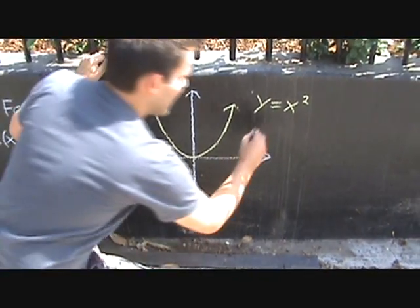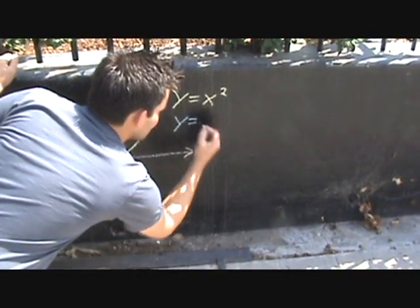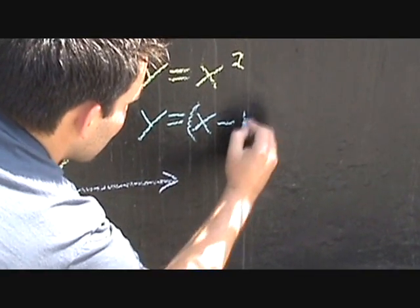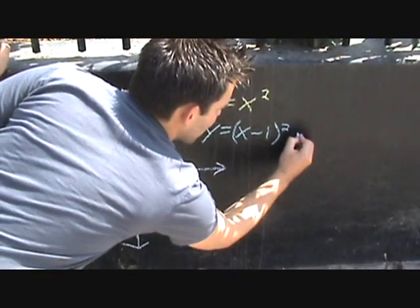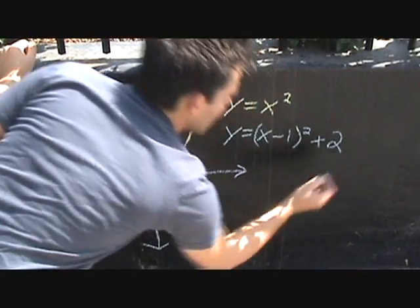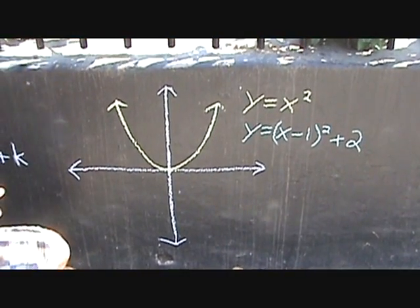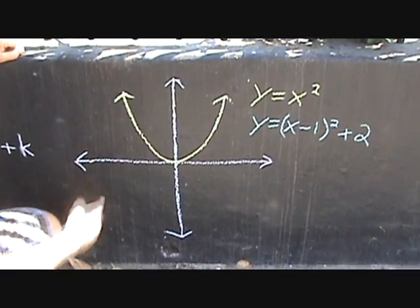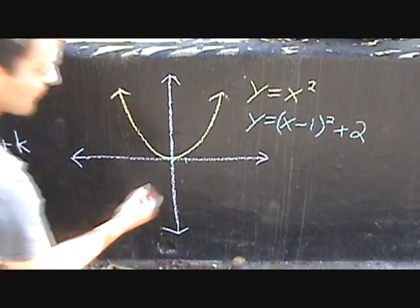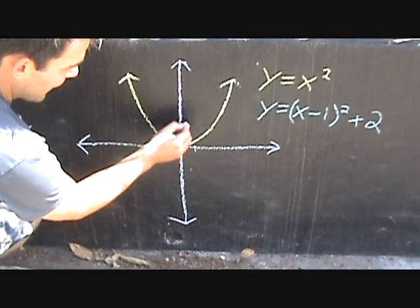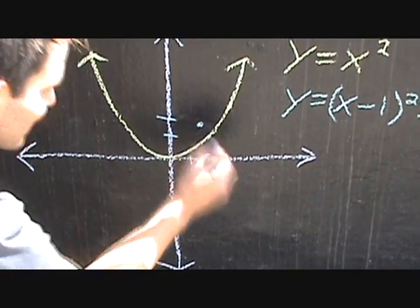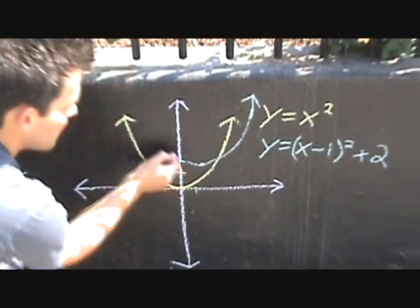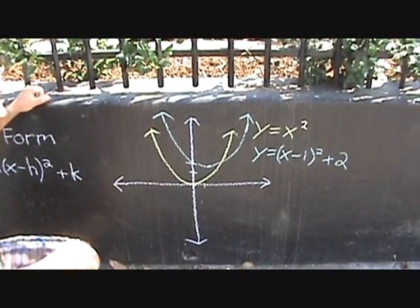Now let's look at something a little different. How about y equals the quantity x minus 1 squared plus 2. Now this graph is the same as this one, except it shifted over one unit horizontally and up two units. So its vertex is right here. But it has the same shape.